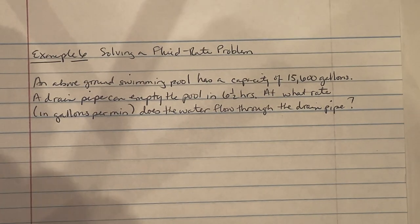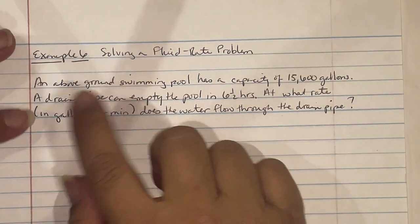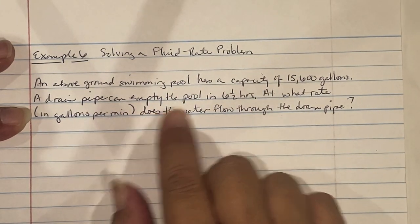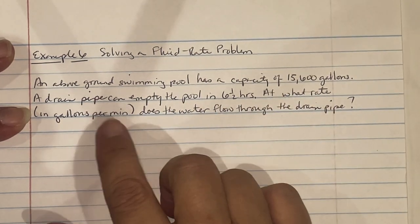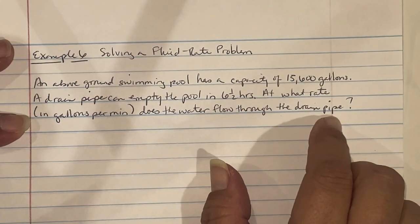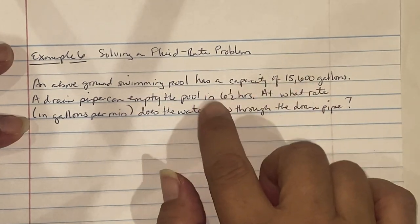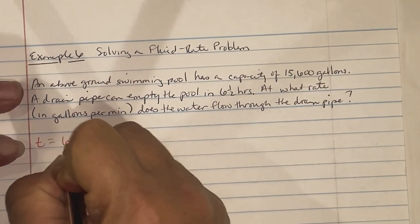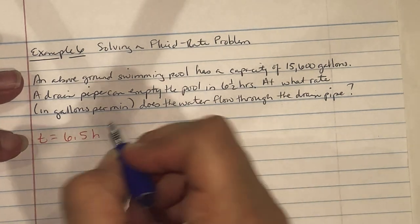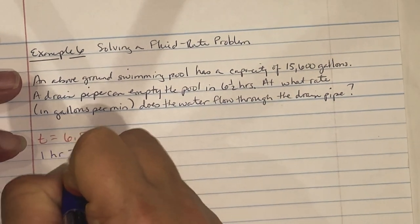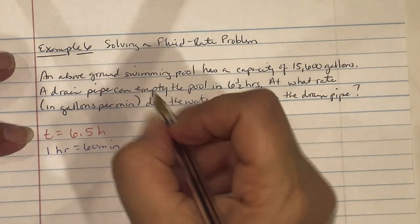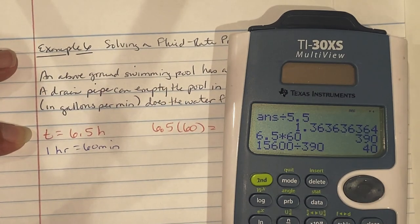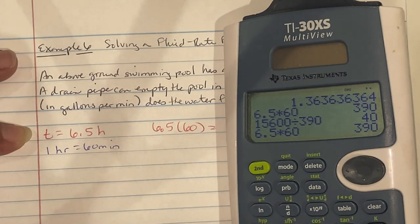Example 6, solving a fluid rate problem. An above ground swimming pool has a capacity of 15,600 gallons. A drain pipe can empty the pool in 6.5 hours. At what rate in gallons per minute does the water flow through the drain pipe? First thing, they tell you gallons and time in hours, but the rate they want is in gallons per minute. Our time was 6.5 hours. I need to convert this to minutes. Remember 1 hour is 60 minutes. So we're going to do 6.5 times 60. So 6.5 times 60 is 390 minutes.